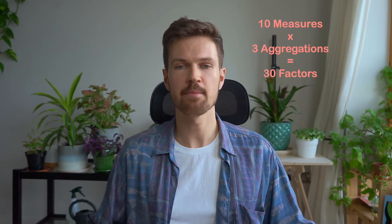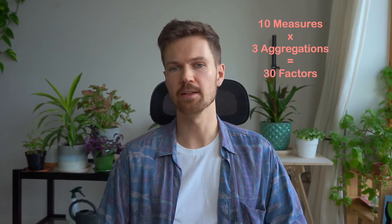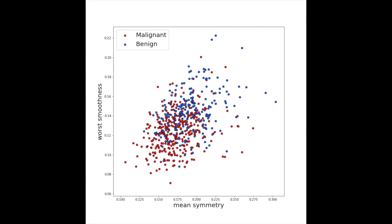Remember, these features are created using measures from many cancer cells. In total, there are 10 measures, and they are aggregated in three different ways. So for the mean symmetry feature, symmetry is our measure, and then we aggregate all the symmetry measures by taking the average. Going back to our two features, you can see that they do a poor job of separating malignant from benign tumors.